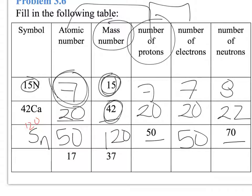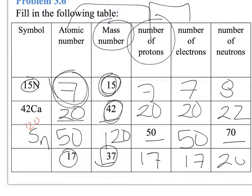Same thing here — this element, they are not telling you which element it is. The atomic number equals the number of protons, and the number of electrons because it's neutral. The mass number is 37, so we do 37 minus 16, which gives us 20 neutrons. We look at element number 17, and that's chlorine, and we write chlorine-37.